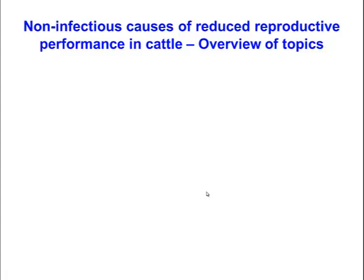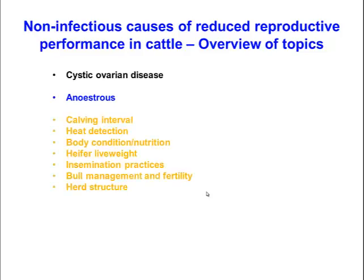We're going to continue on with our discussion of non-infectious causes of reduced reproductive performance in cattle. So far we've talked about cystic ovarian disease, anestrus, and a range of other factors that affect reproductive performance. In this section we're going to focus on the effects due to breed, heat stress, and nutrition.